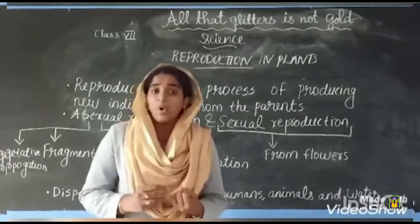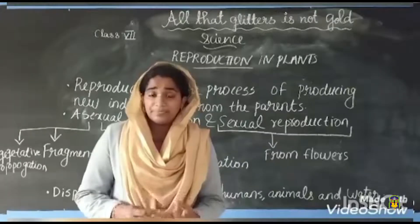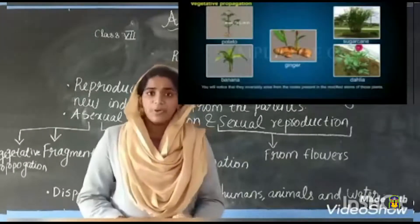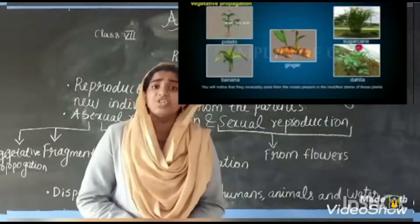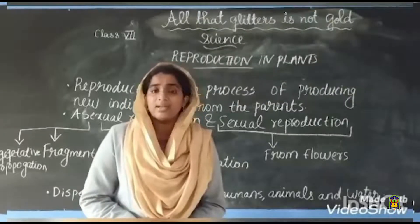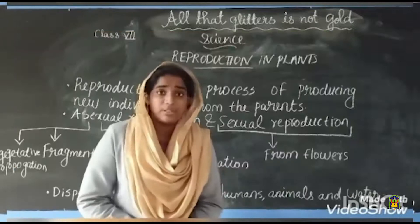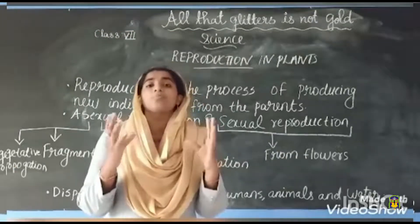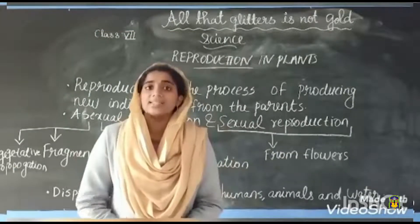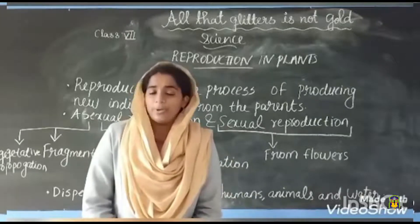Examples of asexual reproduction include fragmentation, spore formation, budding, and vegetative propagation. The vegetative parts of a plant are stem, root, and leaves. New plants obtained from these vegetative parts is called vegetative propagation.